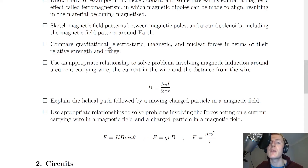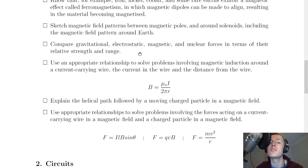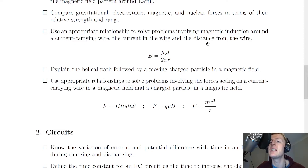Next it says to compare gravitational, electrostatic, magnetic, and nuclear forces in terms of relative strength and range — this was recapped from the higher physics course. You also need to be able to use an appropriate relationship to solve problems involving magnetic induction B around a current-carrying wire, the current I, and the perpendicular distance from the wire r. This gives the equation B equals μ₀I over 2πr.